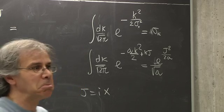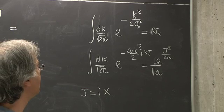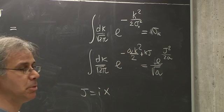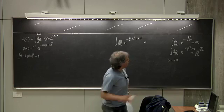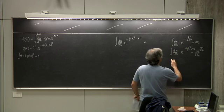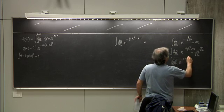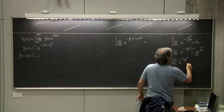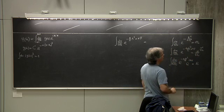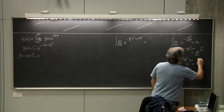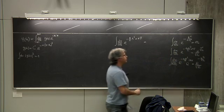The result I have derived doesn't use in a fundamental way the fact that the integral was of a real function — it's pretty much general. And if j equals ix, you can just read from the same formula: integral in dk over square root of 2 pi, e to the minus a k squared over 2, e to the ikx equals e to the minus x squared over 2a, divided by square root of a.